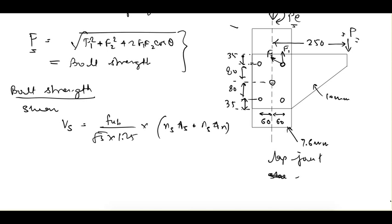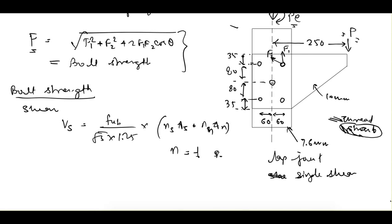Nothing is given about whether the shear plane passes through the thread or the shank, so for critical design we consider it passing through the thread. Therefore Nn = 1 and Ns = 0. The bolt used is M20, grade 4.6; plate strength FU = 410 MPa and FUB = 400 MPa.